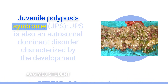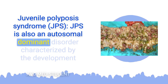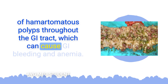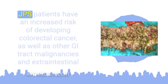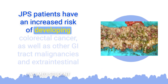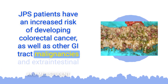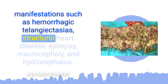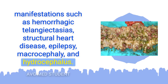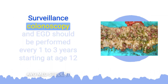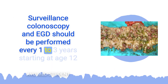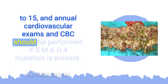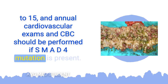Juvenile Polyposis Syndrome is also an autosomal dominant disorder characterized by hamartomatous polyps throughout the GI tract, which can cause GI bleeding and anemia. JPS patients have an increased risk of colorectal cancer and other GI tract malignancies, with extra-intestinal manifestations such as hemorrhagic telangiectasias, structural heart disease, epilepsy, macrocephaly, and hydrocephalus. Surveillance colonoscopy and EGD should be performed every 1 to 3 years starting at age 12 to 15, and annual cardiovascular exams and CBC should be performed if an SMAD4 mutation is present.